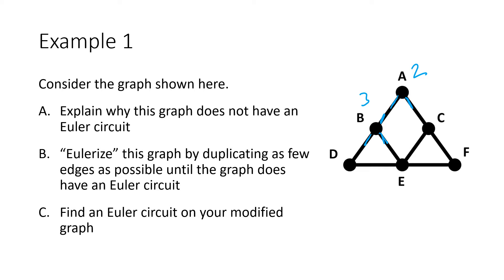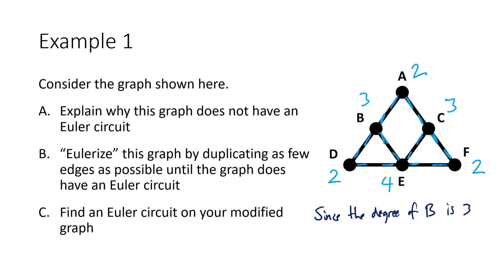Just to practice, I'll find the degree of all vertices. C has degree 3, D has degree 2, E has degree 4, and F has degree 2. Our explanation would say: since the degree of B is 3, which is odd, this graph does not have an Euler circuit.